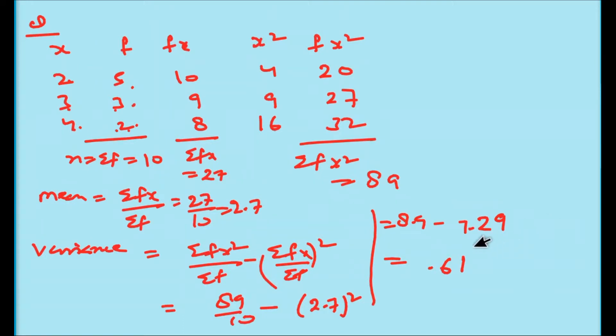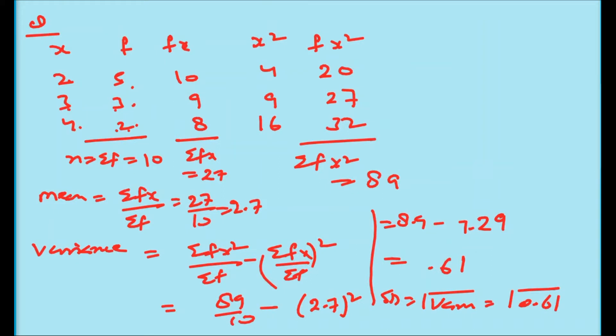The variance comes out to approximately 0.61. Standard deviation is the square root of variance, so it is the square root of 0.61. This way you can find the standard deviation, mean, and variance in statistics. I'm explaining this because when we go through probability distributions, we will have to find these again using the same formulas. Now I'm moving on to the next topic.